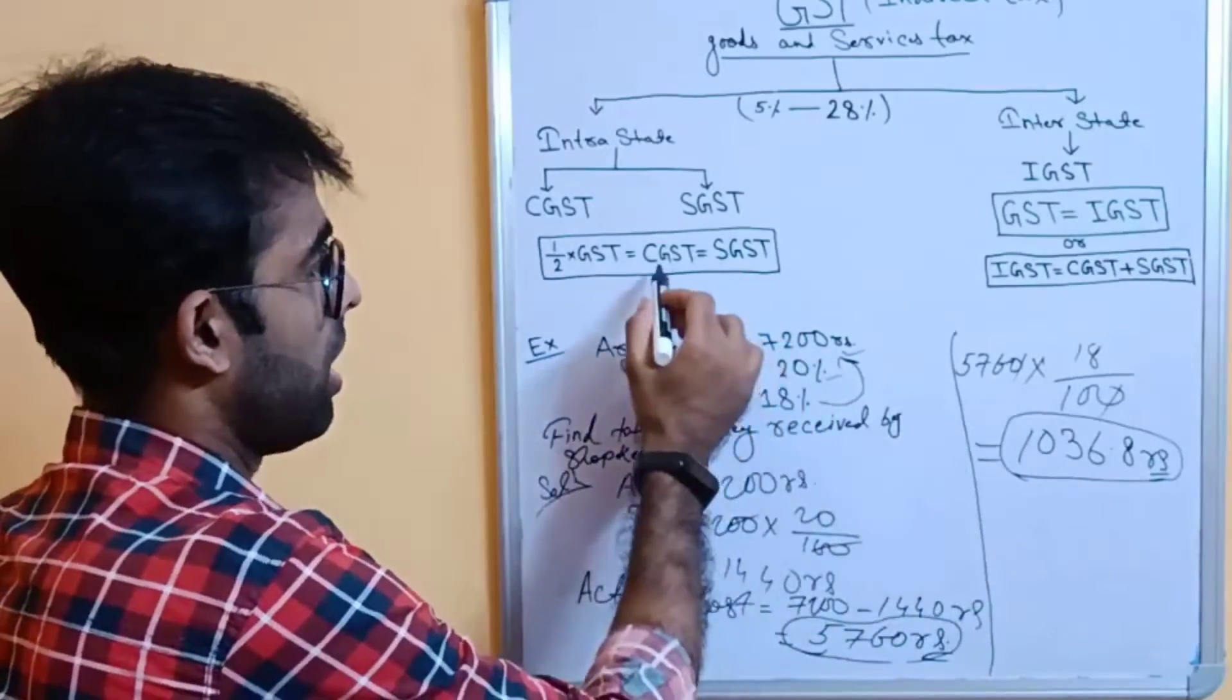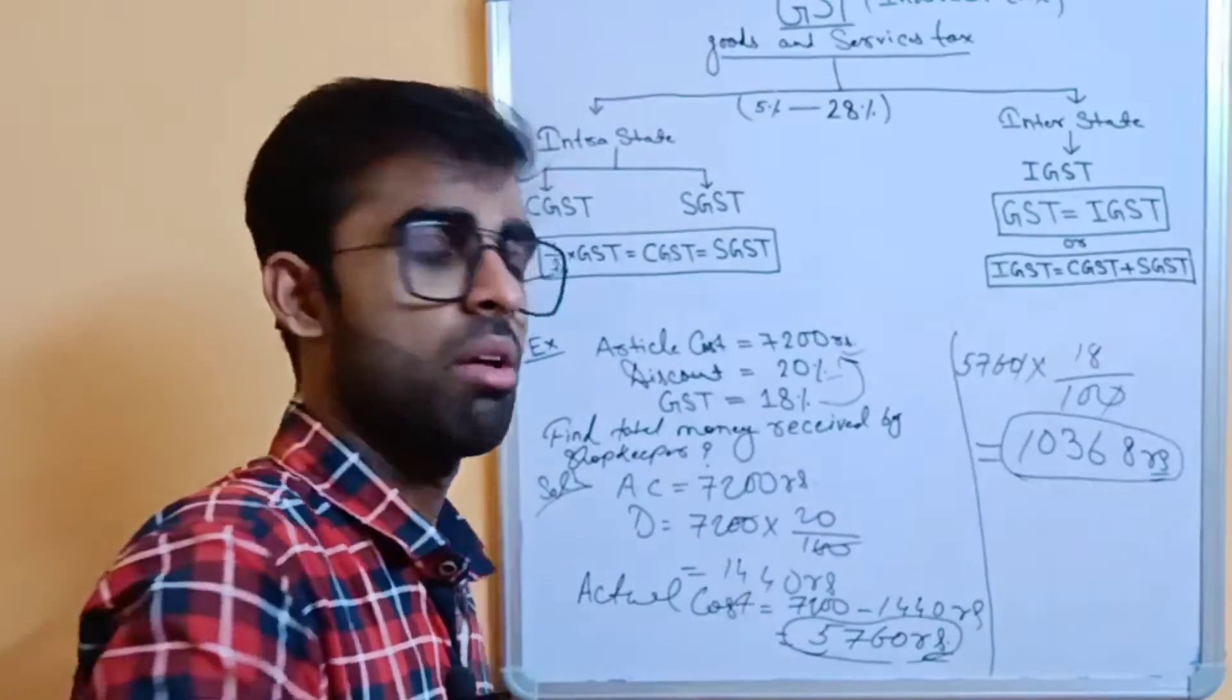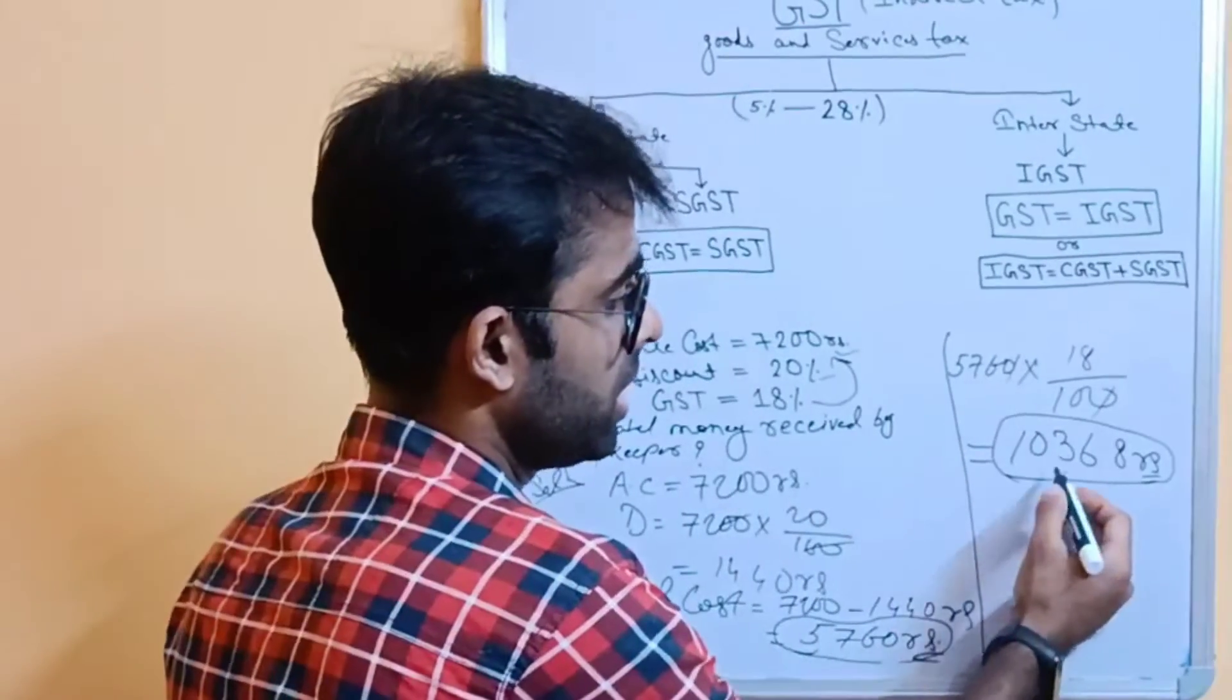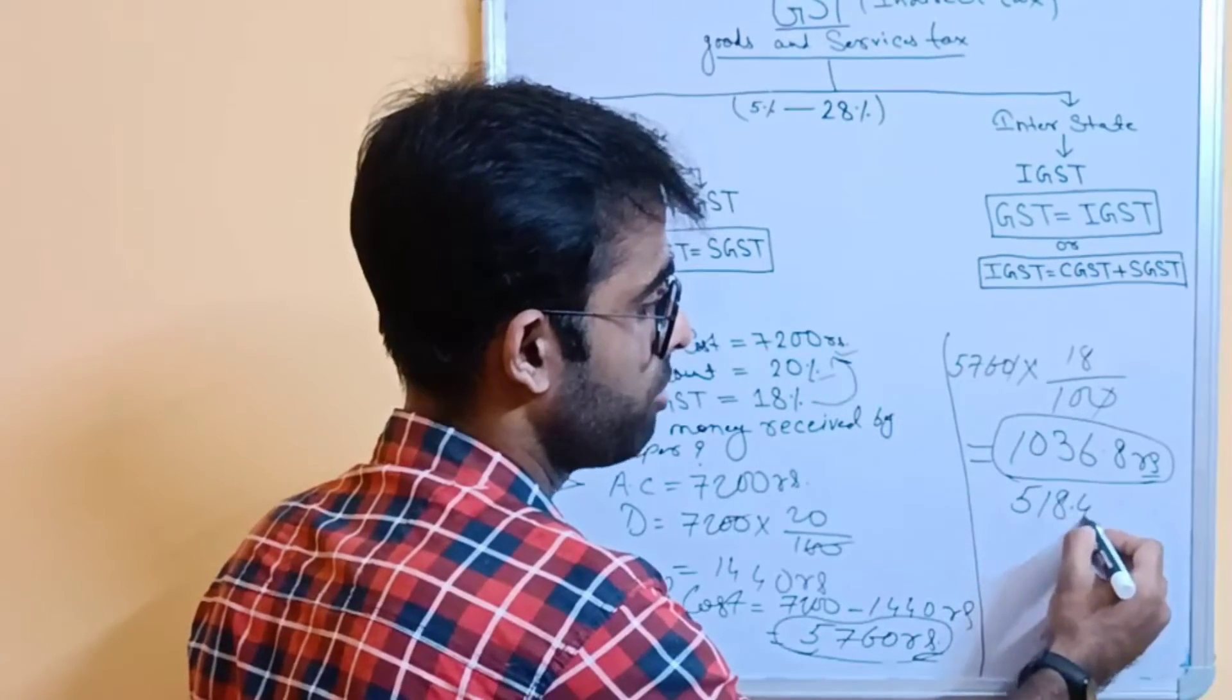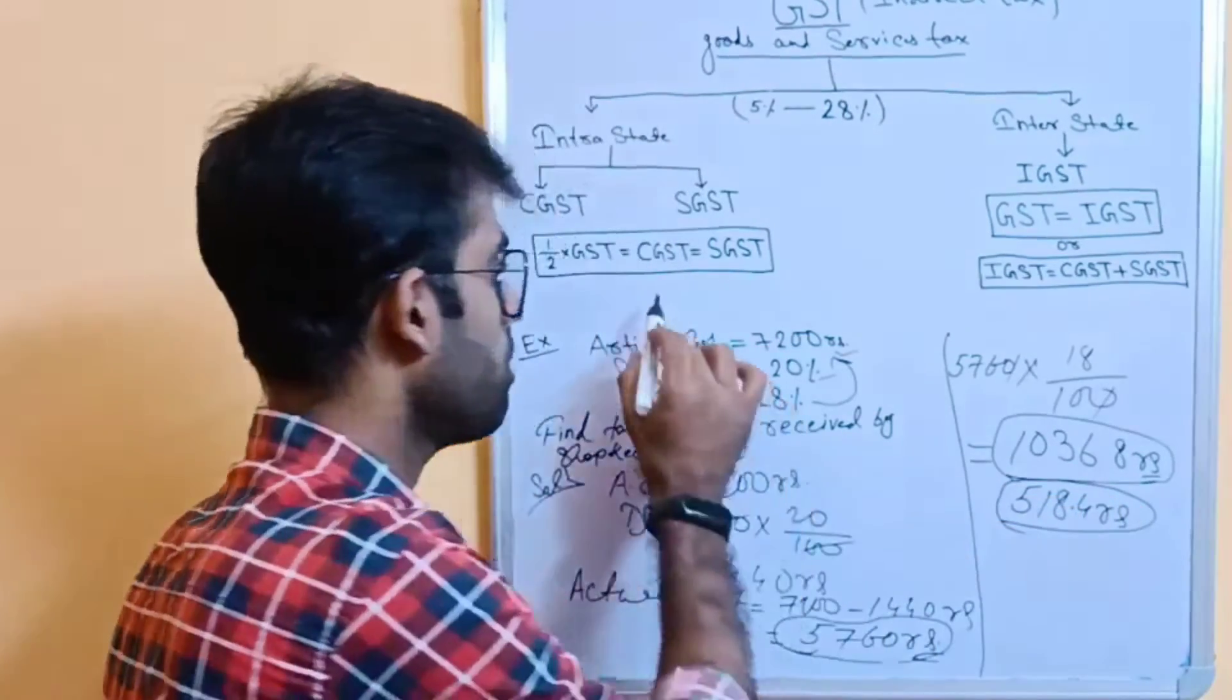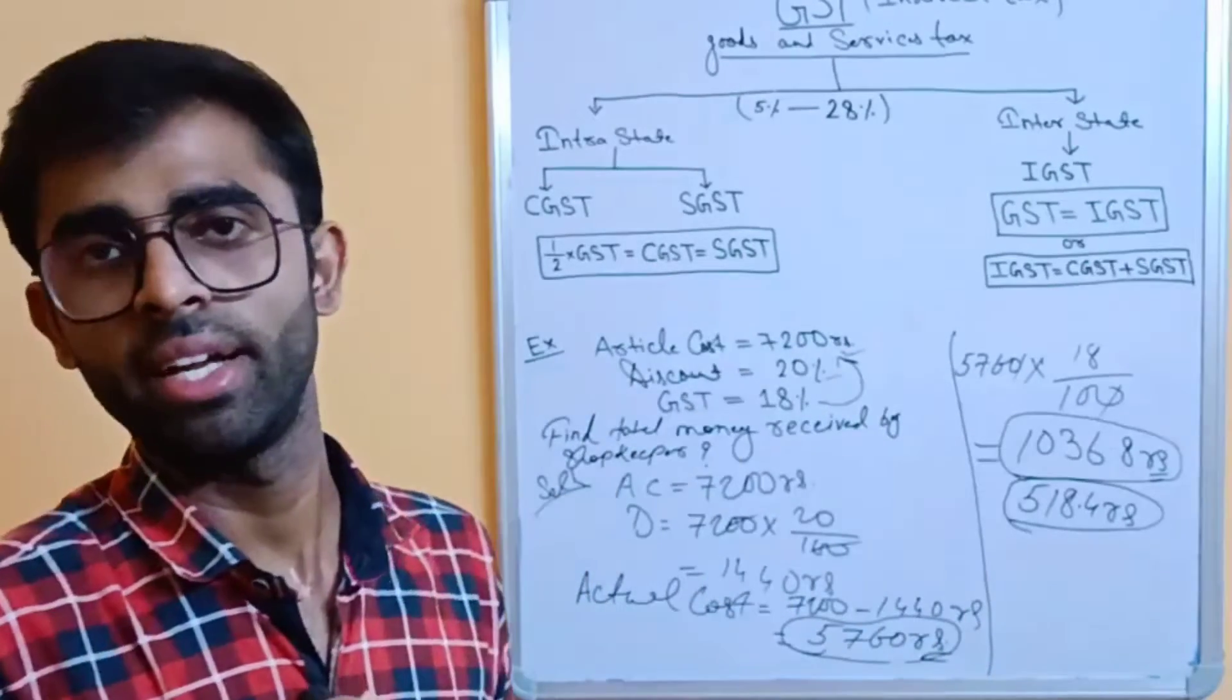If we divide this in 2 equal parts, we can say that our CGST and SGST value will be 518.4 rupees. If we divide in 2 equal parts, 518.4 rupees. This amount is applicable for central tax as well as state tax.